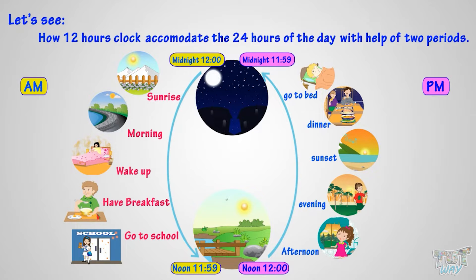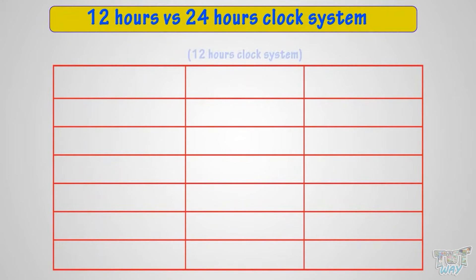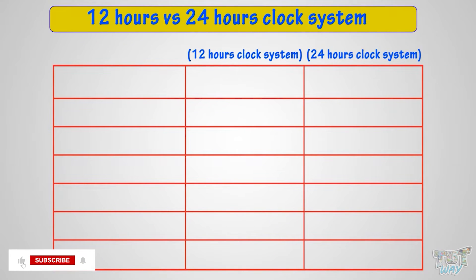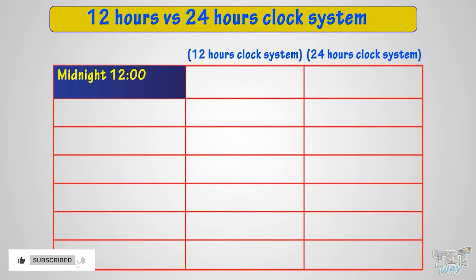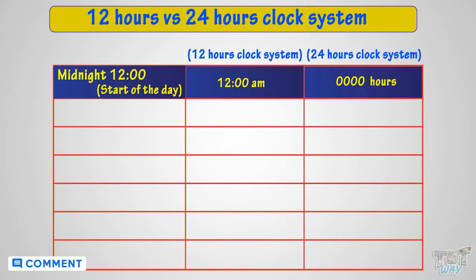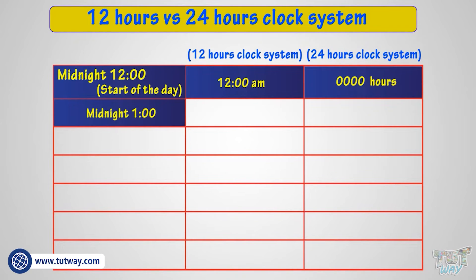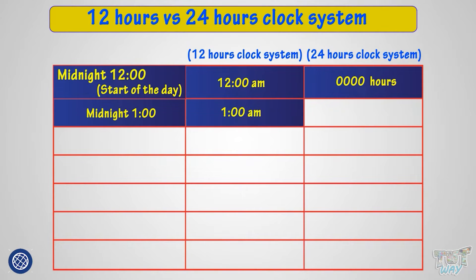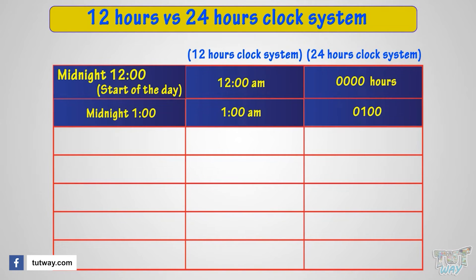Now let's learn what the 24-hour clock system is. Here we have both the 12-hour and 24-hour clock systems. 12 midnight is the start of the day. In the 12-hour clock system we call it 12 a.m., and in the 24-hour clock system we call it 0 hours. 1 in the morning is called 1 a.m. in the 12-hour system, and 0100 — that is 100 hours — in the 24-hour system.